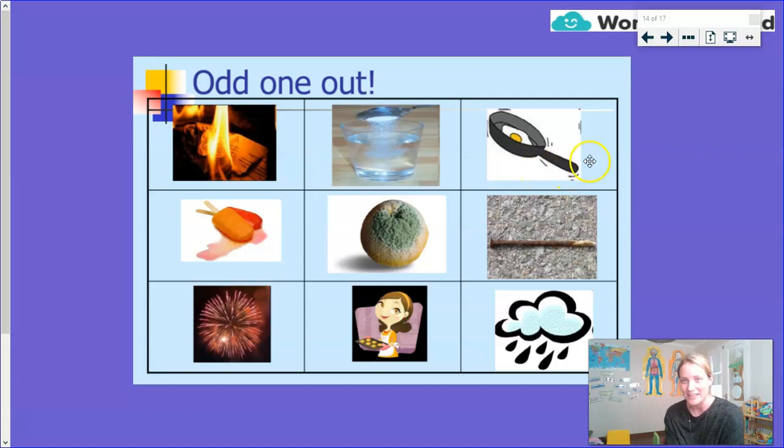So now, very quickly, going across in my rows. Here, the mixture is the physical change. These two are chemical. Here, the ice lollies is the physical change. These two are chemical. And here, it's the cloud that is a physical change. And these two are chemical.